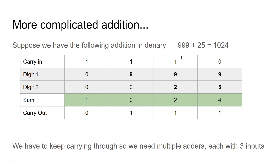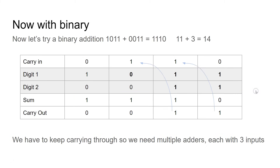The same kind of thing happens in binary. If we've got 1011 (which is 11) and 0011 (which is 3), and we add those two together, in decimal they make 14. Let's see if that works.